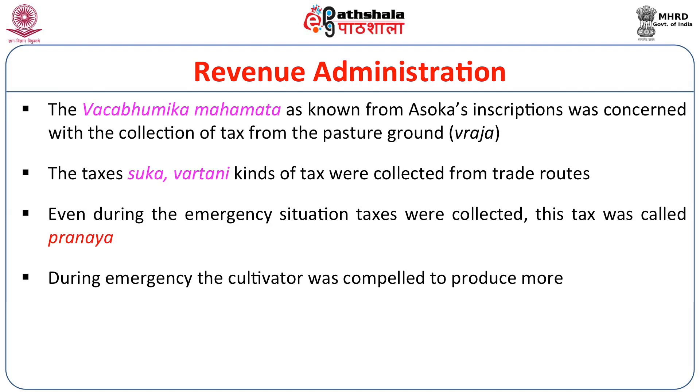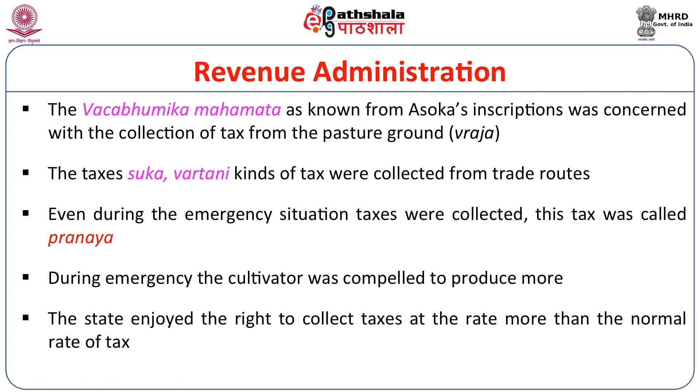The state collected tax called Aya from mines according to the Arthashastra. The Vrajabhumika Mahamattas, known from Ashoka's inscriptions, were concerned with the collection of tax from the pasture ground — Vraja. Taxes like Shulka, Vartani, and other kinds were collected from trade routes — even today we pay taxes on national highways so that those roads are well maintained. During emergency situations, taxes were collected at a rate higher than the normal rate — this was called Pranaya. The king could impose emergency taxation once during his reign.